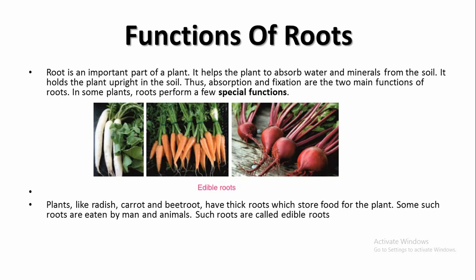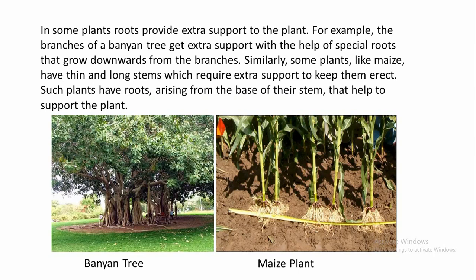In some plants, roots provide extra support to the plants. For example, the branches of a banyan tree get extra support with the help of special roots that grow downwards from the branches.